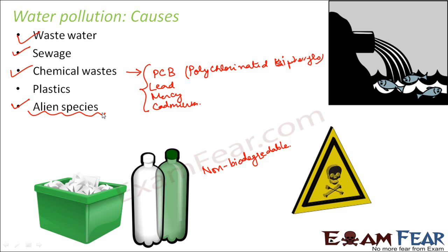Over a period of time, the number of big fishes in that pond will increase and the number of small fishes will decrease. Additionally, due to the introduction of a foreign species, that foreign species might secrete certain chemicals, or its body processes might give out substances that contaminate the water of that body, essentially spoiling the original organisms which were living there. So due to the introduction of alien species, water can also get polluted.